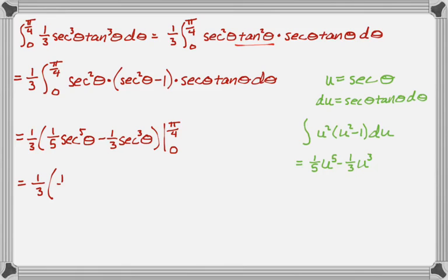So this is plugging in pi over 4. So the secant of pi over 4 is radical 2, or 2 to the 1 half, which is where I got this. And then minus the secant of 0 is 1. So it's minus 1 third times 1 fifth minus 1 third. Awful.